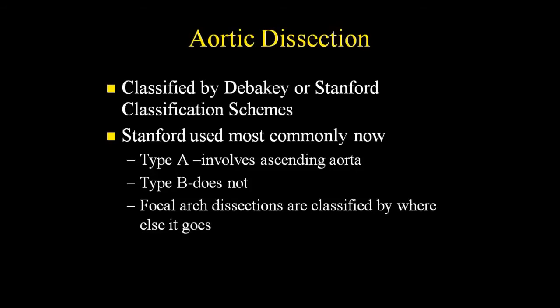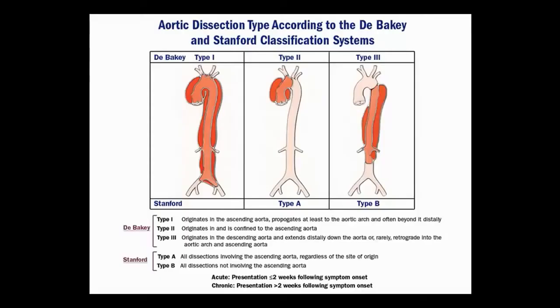You should know the classification schemes. Basically we use Stanford: Type A involves the ascending aorta, Type B is past the left subclavian. If it's localized to the arch, it gets classified as A or B depending on the direction. The old DeBakey Type 1, 2, 3 roughly maps onto this — Type 1 covers A and B (the whole thing), while A is ascending and B is descending past the left subclavian.